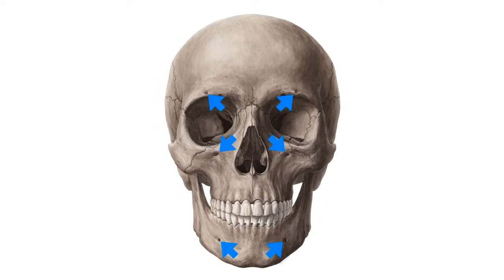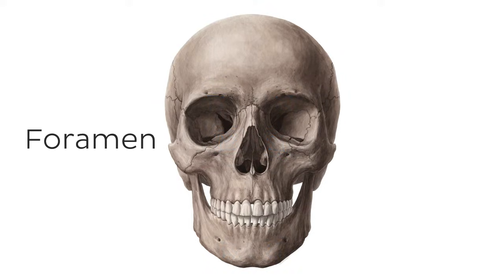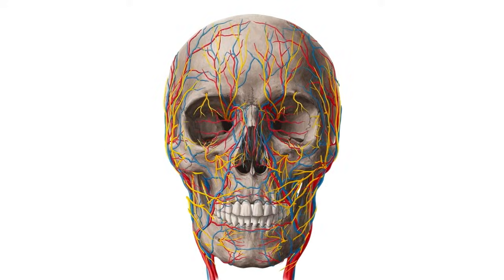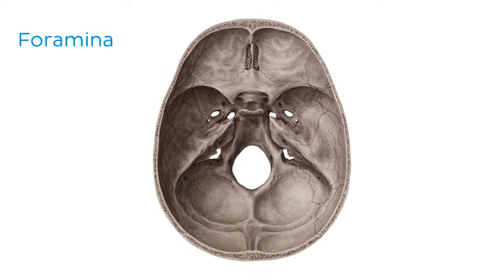As you've probably noticed, there are tons of holes in the skull. These are called foramen, which is the singular, and foramina, which is the plural. Through these holes, many important blood vessels and nerves pass through. We couldn't finish this tutorial without mentioning some of the most relevant foramina.